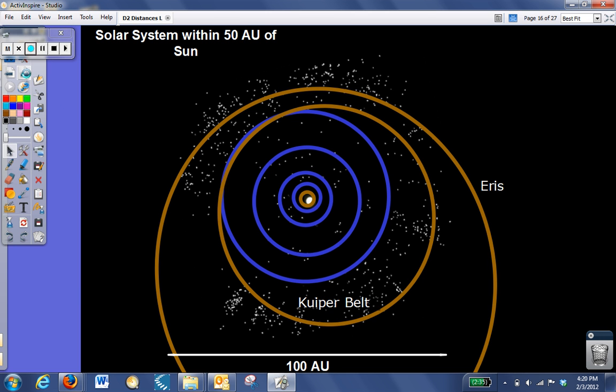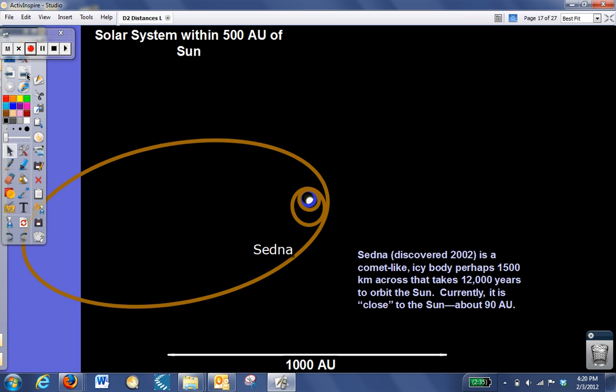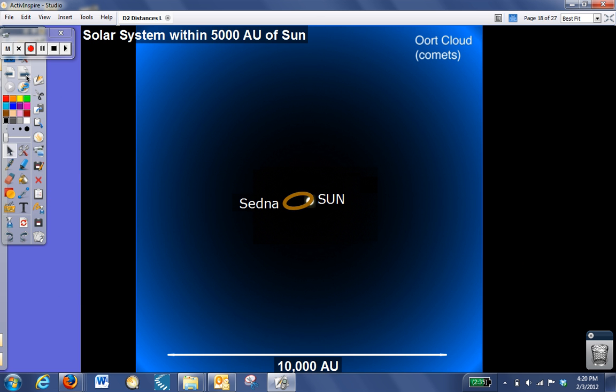Ten times farther out, at 1,000 AU, we haven't even left the solar system yet. One of the other dwarf planets discovered recently, Sedna, orbits at a distance greater than 1,000 AU. Currently it's fairly close to the Sun at about 90 AU, but it gets much, much farther away. At 10,000 AU, we still haven't even left the solar system. We get into an area called the Oort Cloud, which is where many scientists believe many comets are born. They travel into and around the Sun, and we see the characteristics of comets.